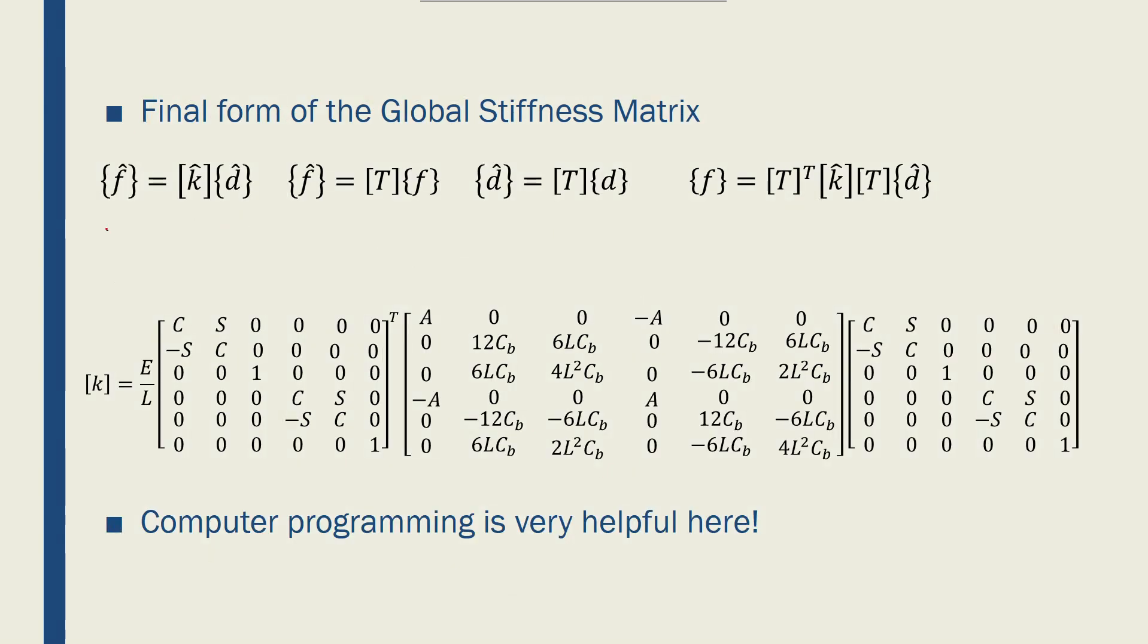These are the equations that we have. The relationship between forces and displacements are given by a stiffness matrix. Then we can convert from local to global stiffness matrix or coordinate system using the transformation matrix that we found before.